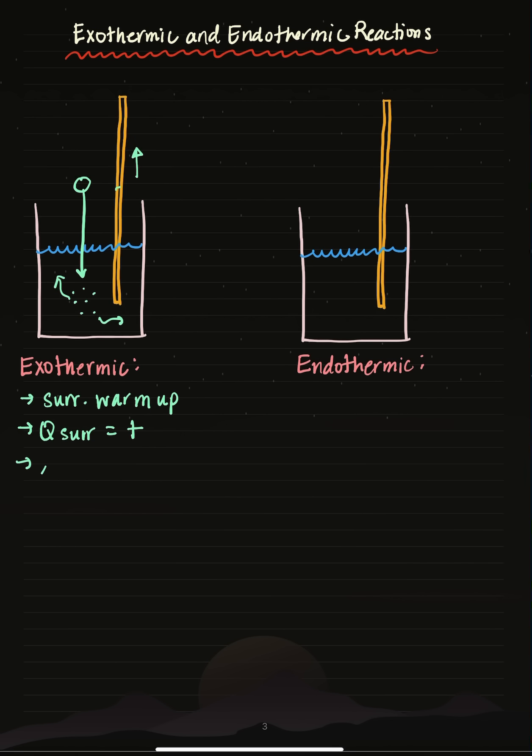But as a result, because the reaction or system is losing energy, we'll give delta H of the reaction a negative value to show that heat is moving from the reaction into the surroundings.